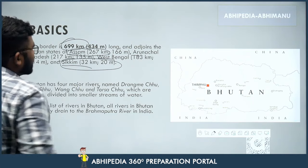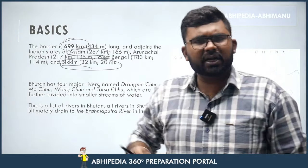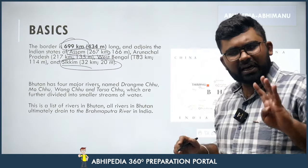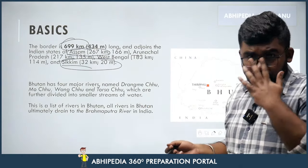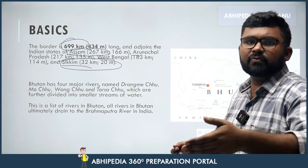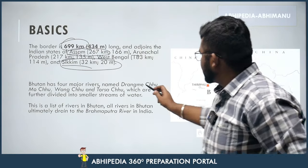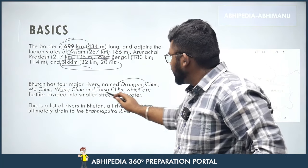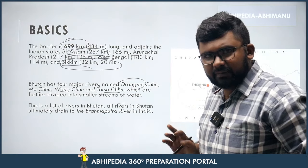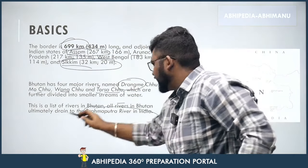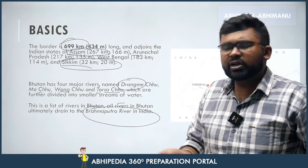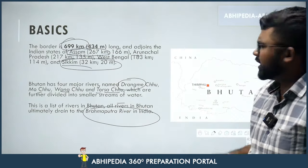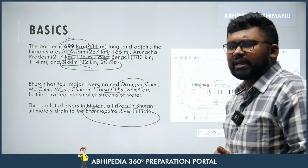The shortest border is with Sikkim, only 32 km. This is the kind of question that can be asked in exams. There are 4 major rivers in Bhutan: Drangme, Mo, Wang Choo, and Torsha Choo. These 4 rivers are tributaries of the Brahmaputra. If you want more detail, you can look into left-bank and right-bank tributaries.